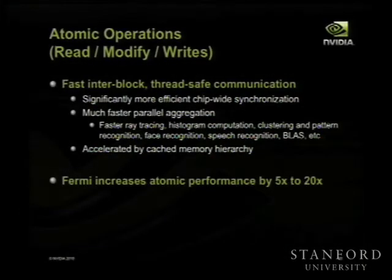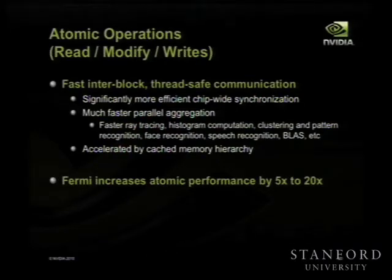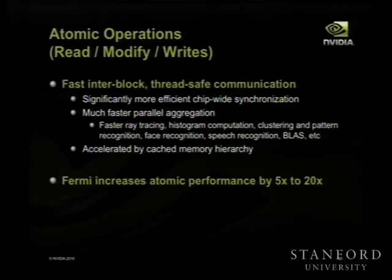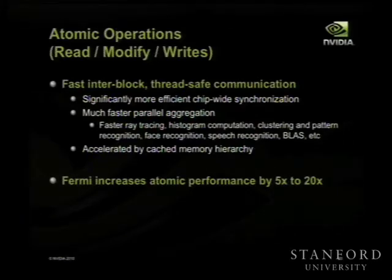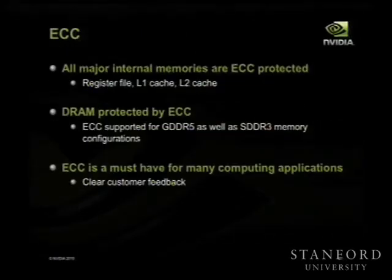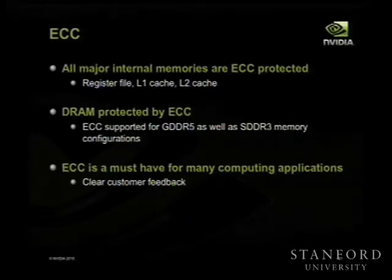A lot of people were complaining about atomic rates in previous generations, so we put a lot of focus on how fast we can do atomic operations — read-modify-writes — and we'll probably continue to improve this. We increased atomic performance about 5 to 20x depending on the case. We also added ECC coverage: all structures — the register file, L1 cache, L2 cache, and main memory DRAM — are now protected by ECC in GF100.